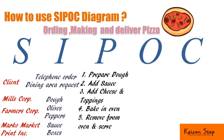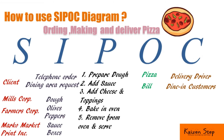Regarding outputs, we have: pizza and bill. For the customer column, we list: delivery driver, as he is the first customer to receive the output; dine-in customers; take-away customers; and delivery customers.